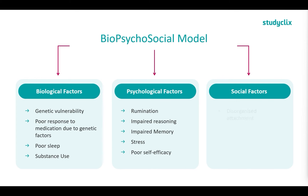Moving on to our social factors, we have disorganised attachment — a style of attachment characterised by inconsistent or contradictory parenting behaviours by the primary caregiver. There are a few different types of attachment, but this is the one most likely to trigger an onset of mental health disorders. Loss of significant relationships can also be a social factor, and then we also have stigma — considered a mark of shame, disgrace, or disapproval, normally associated with a quality or characteristic of a person. There is a lot of stigma around mental health as well as race, and this can all affect someone's mental health.